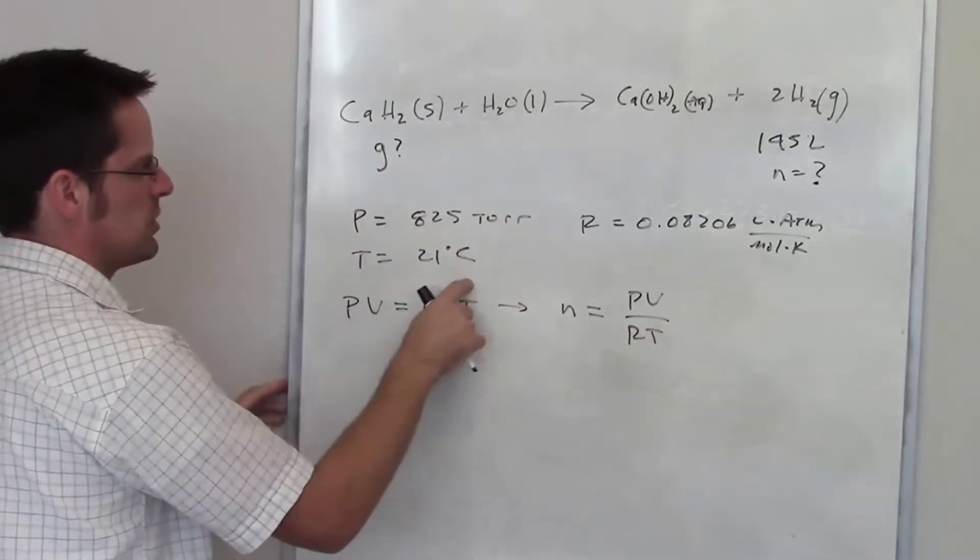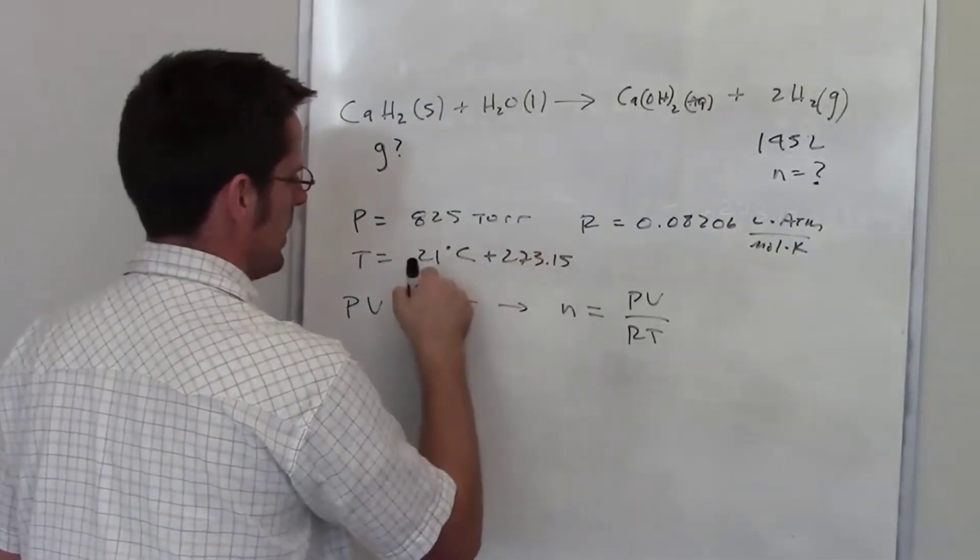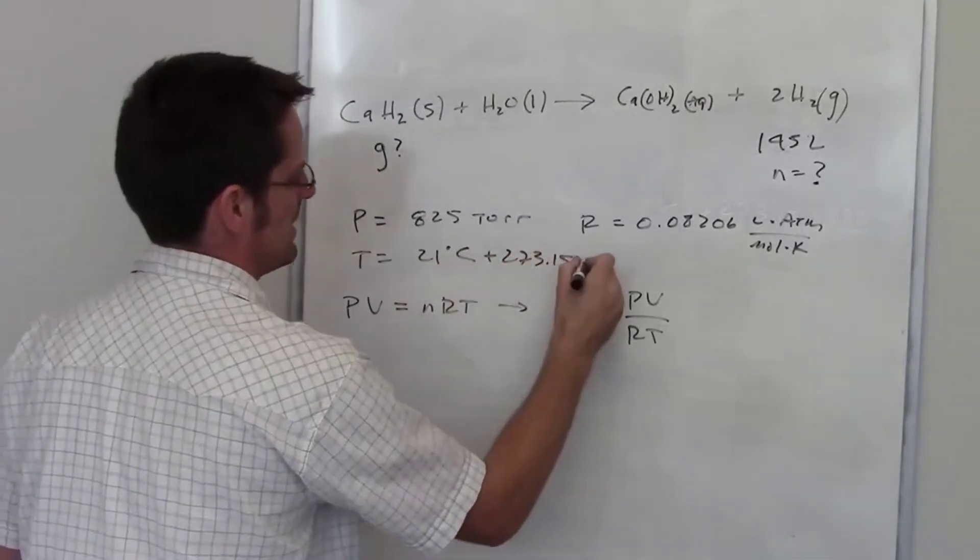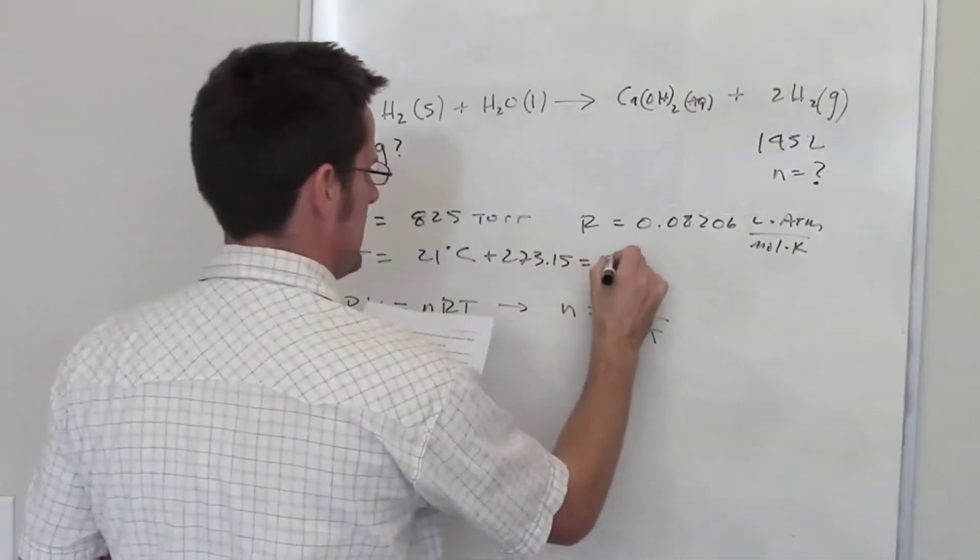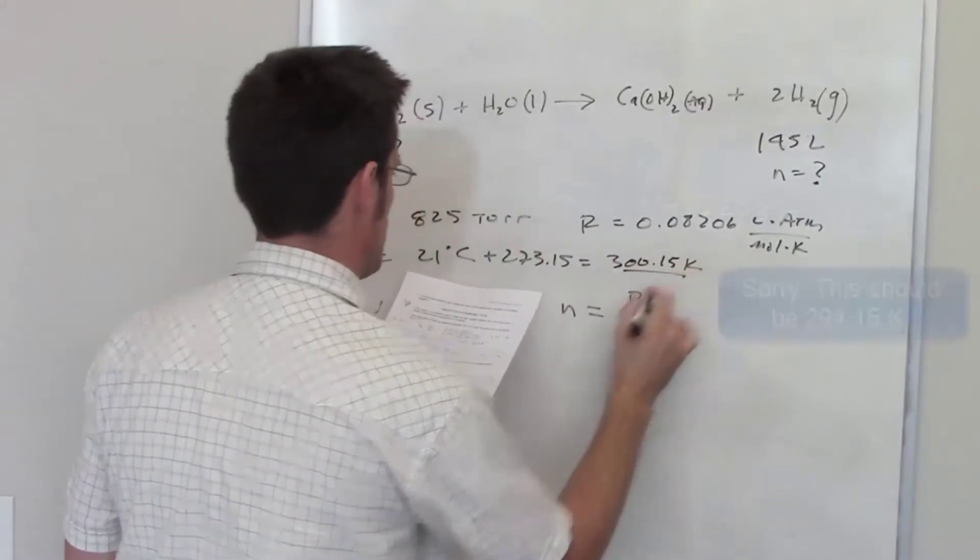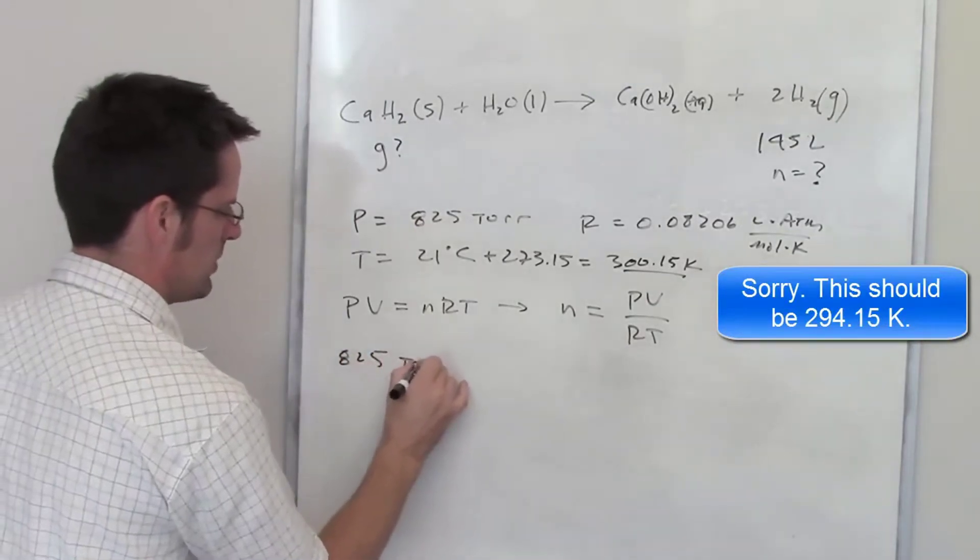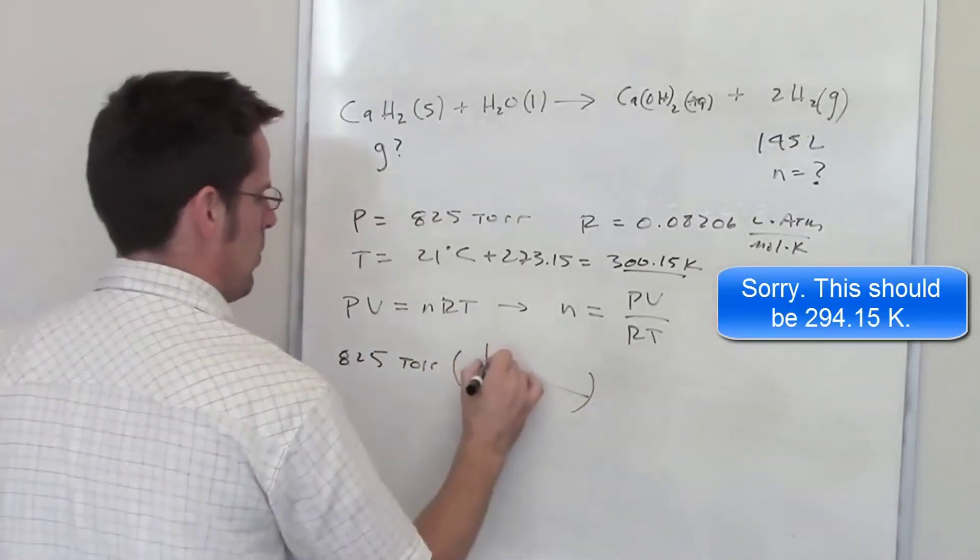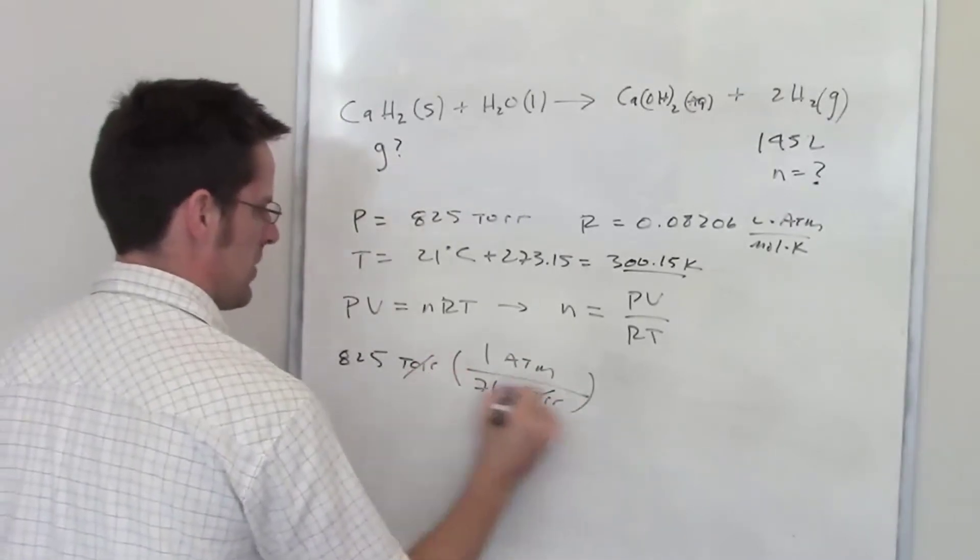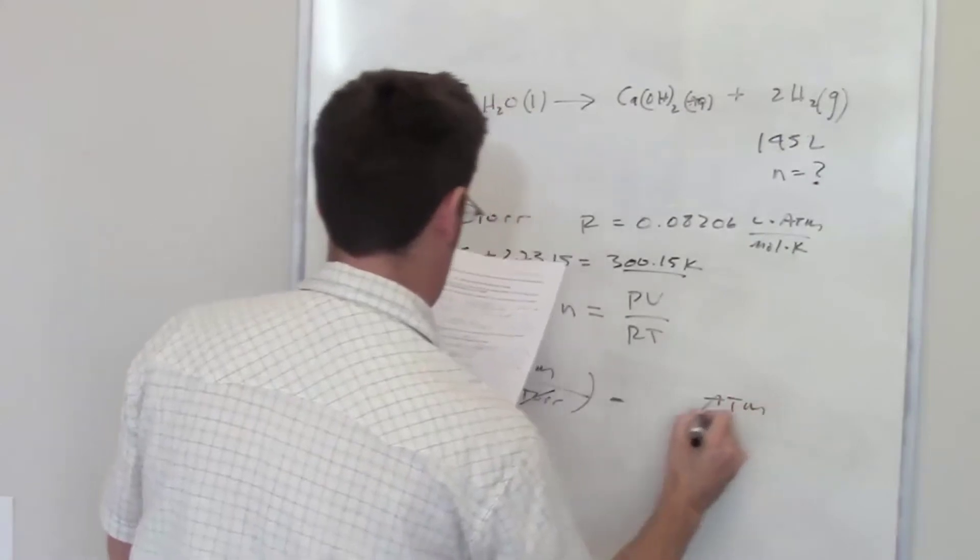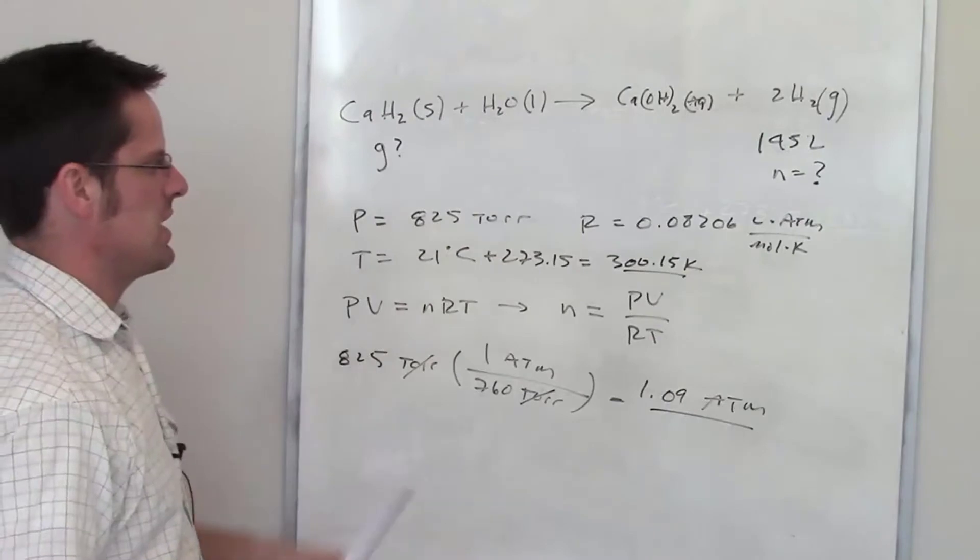Pressure's in torr, temperature's in degrees Celsius, so I'm gonna have to do some conversions. 21 added to 273.15 gives me the number of kelvins, that equals 294.15 kelvins. So that's my temperature. For pressure, I've got 825 torr. I've memorized that one atmosphere equals 760 torr. The torrs cancel each other out and I've calculated that ends up being 1.09 atmospheres. So now I've got everything in the units that I need.